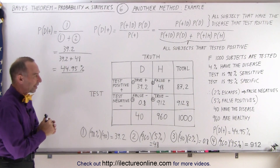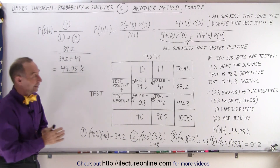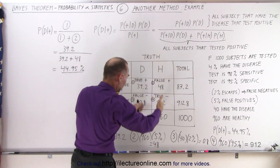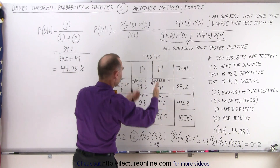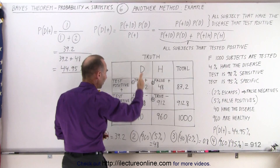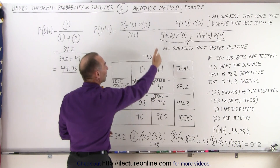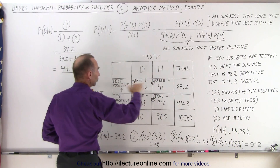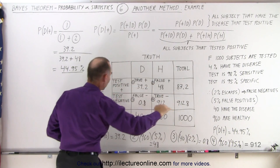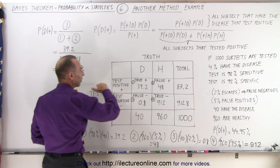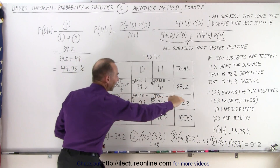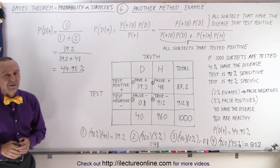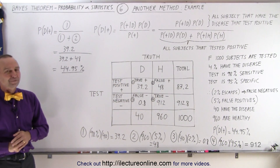So this is how we use the table method. Again, at the top we have the truth — going down, these are the true values: the ones that have the disease and the ones that are healthy. In the horizontal direction we have the ones that test positive and the ones that test negative. And that's how it's done.